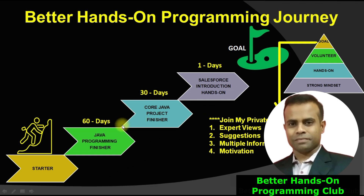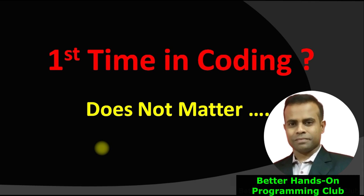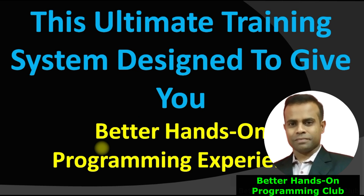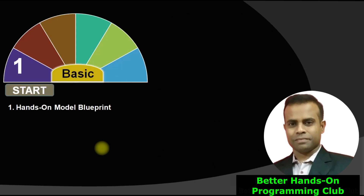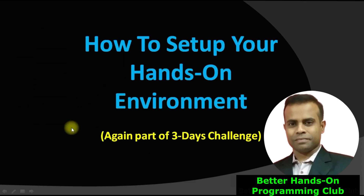Once you complete this, you can also join my private VIP group where you can get expert views, suggestions, information, and motivation. This should be your three months journey, and I will explain more details. The 60-day journey already has a blueprint document built. It doesn't matter which year of study you are in, whether it's your first time in coding or in a project — this ultimate training system is designed to give you a better hands-on programming experience. Starting from basic, you are on a starter position, and I called it the Hands-On Model Blueprint.